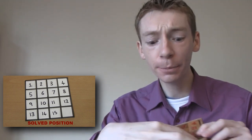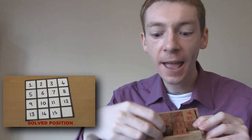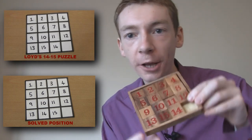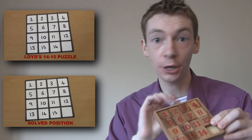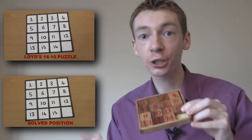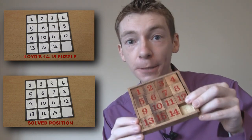Now in 1880, the American puzzle expert called Sam Lloyd started to sell this puzzle but he sold it with the numbers 14 and 15 swapped over like that and he offered a prize of 1,000 US dollars to the first person who can solve this puzzle.